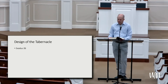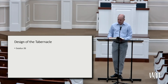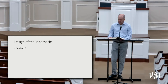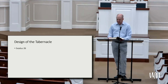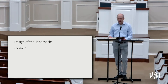You shall make a veil woven of blue, purple, and scarlet thread and fine woven linen, woven with an artistic design of cherubim. You shall hang it upon four pillars of acacia wood overlaid with gold, with gold hooks upon four sockets of silver. The veil shall divide the holy place from the most holy. You shall put the mercy seat upon the ark of the testimony in the most holy, and set the table and lampstand outside the veil. You shall also make a screen for the door of the tabernacle.